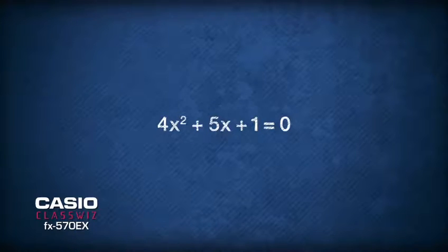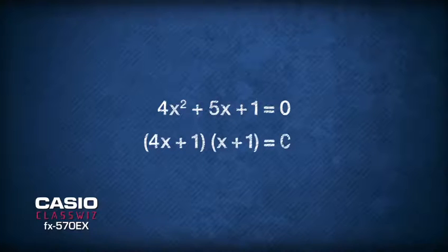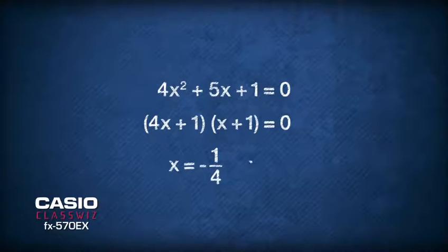Next, we can perform factorization to become (4x + 1)(x + 1) equals 0, and solve that x equals negative 1 over 4 or x equals negative 1.